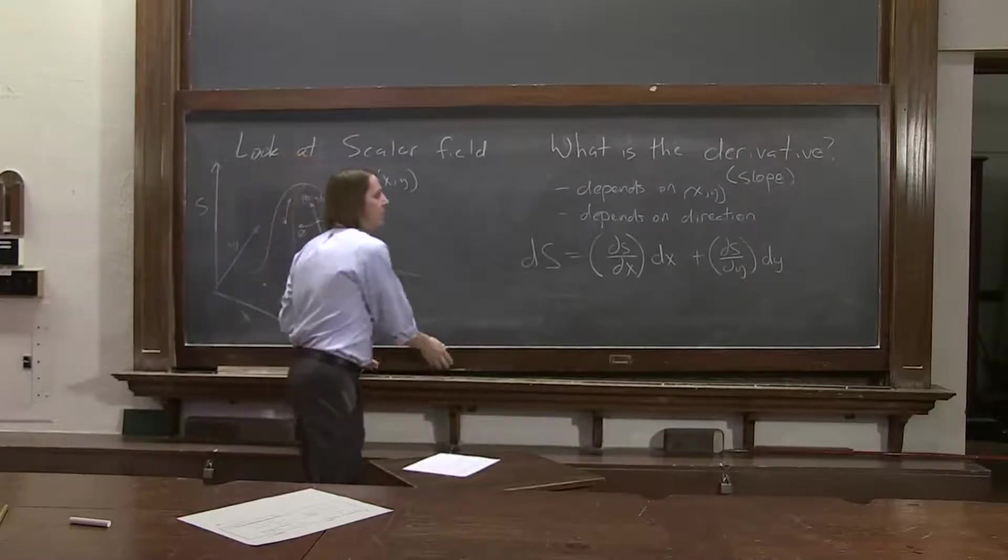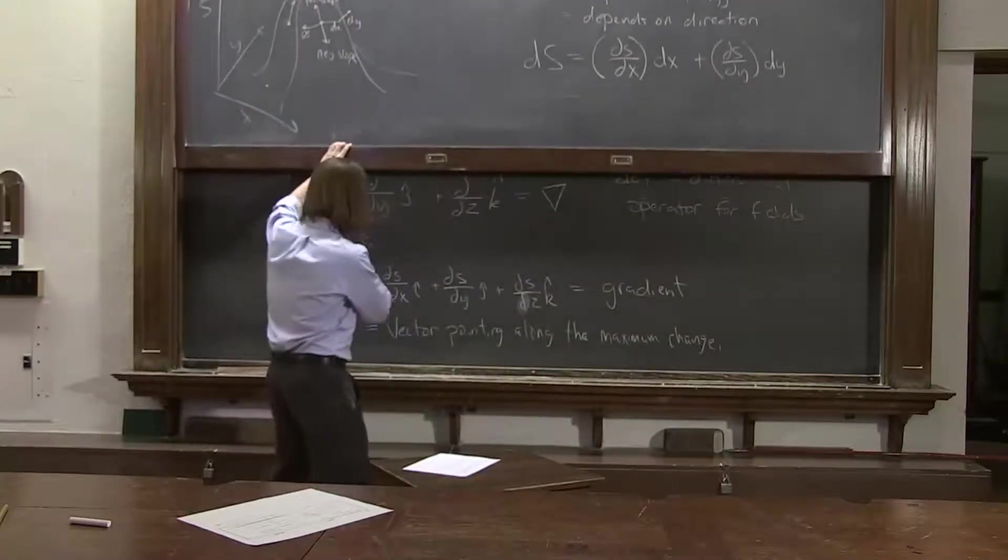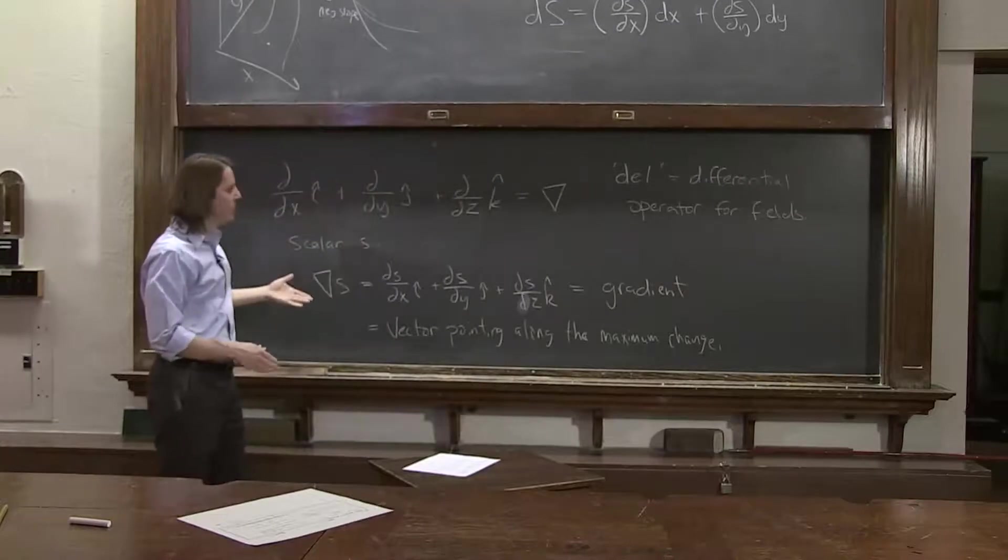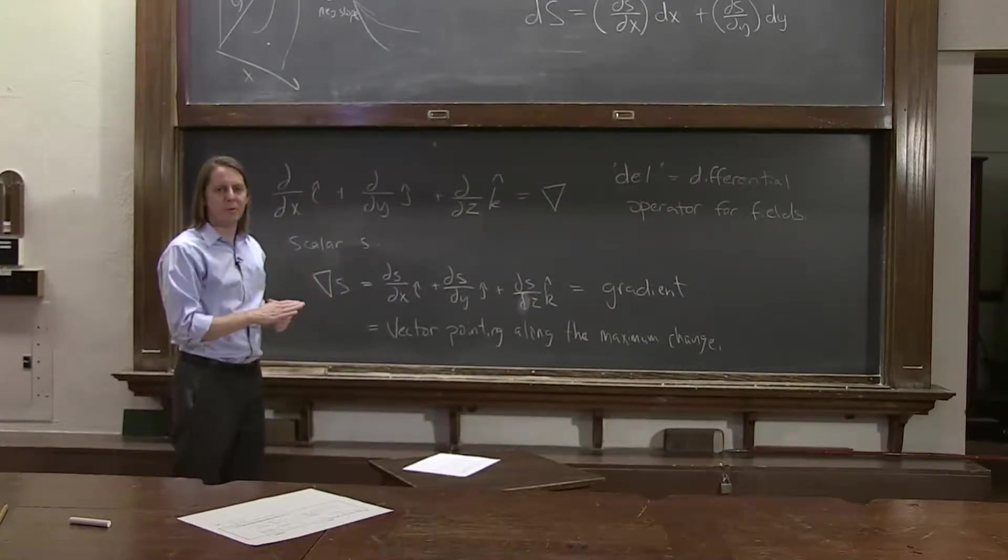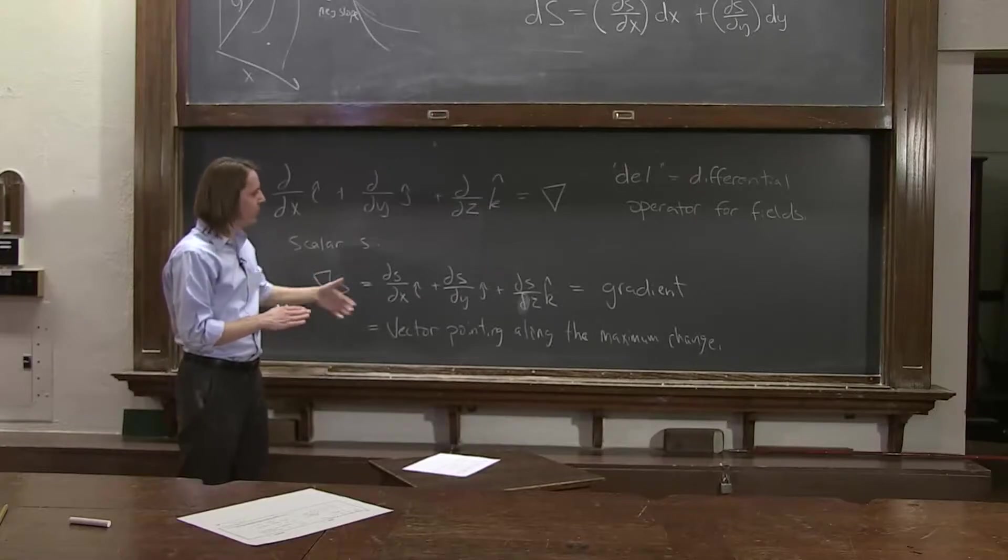So the gradient is one of the ways to take a derivative of a field. It's the way, applying it this way, just taking the gradient, applying it directly to a scalar field gives you basically the three-dimensional version of the derivative you're used to. It gives you the three-dimensional gradient of the field.